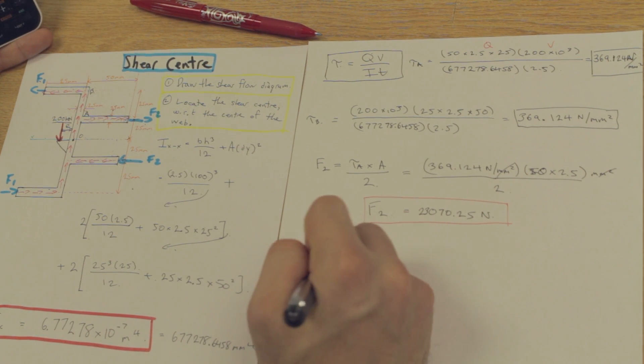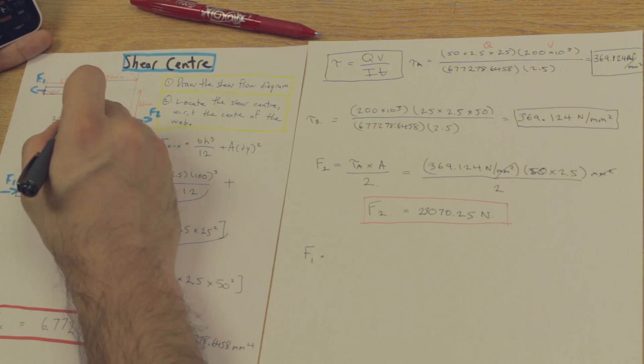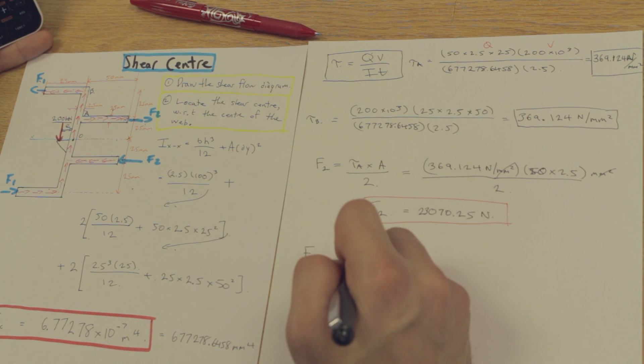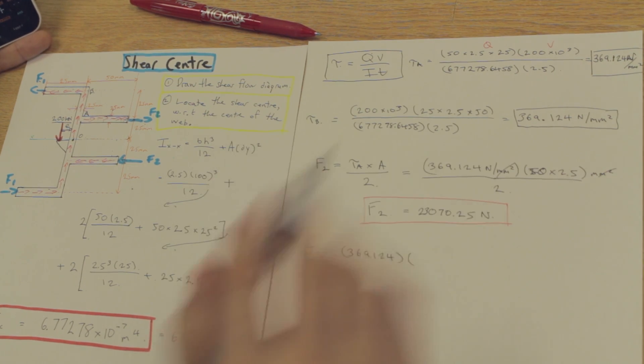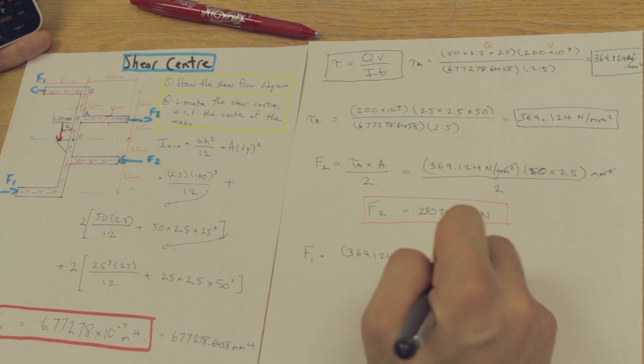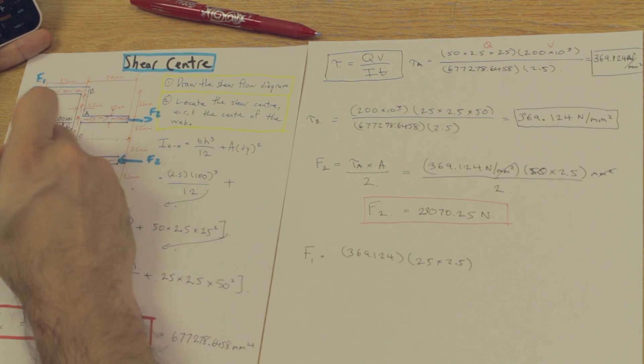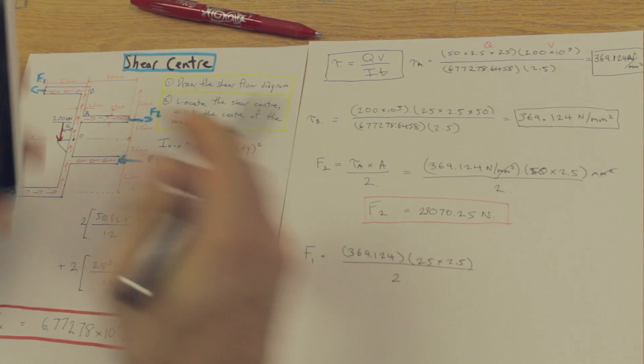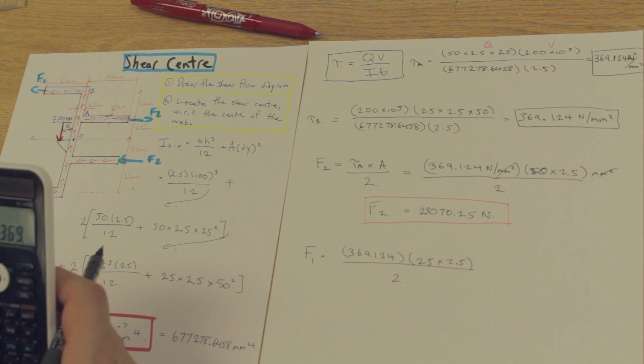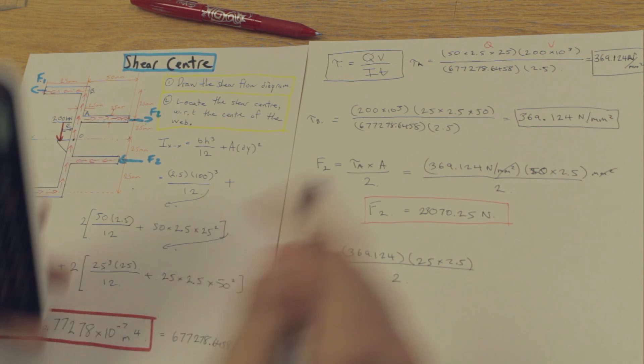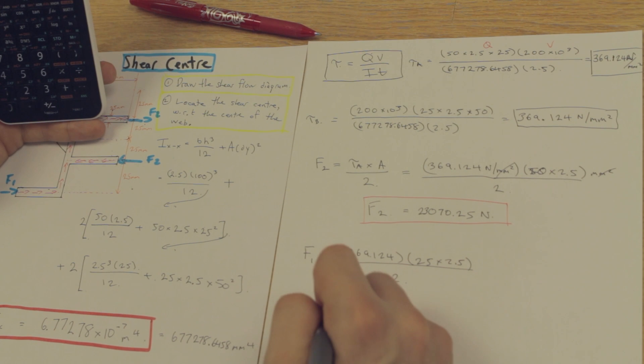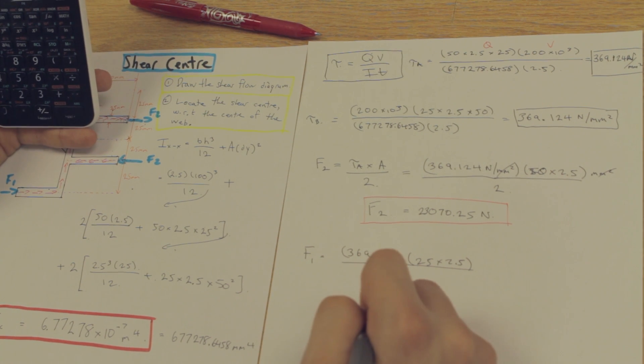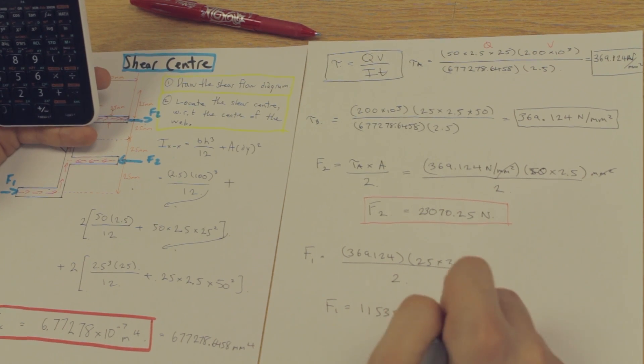Let's just quickly calculate F1. We have tau B, which is for this section here, and it is the same thing. I'm going to not put the units here, because we know what we're doing now. Times 25 times 2.5, the area of this piece here, divided by 2. What do we get? We end up with 11,535.13 newtons.